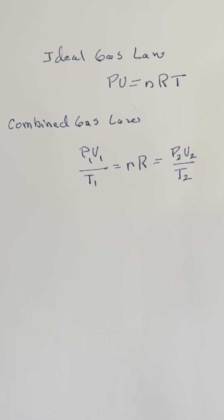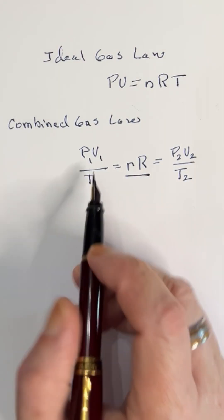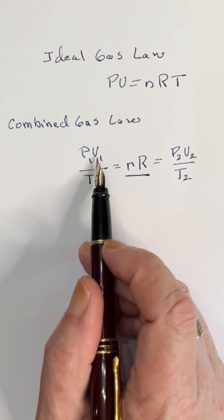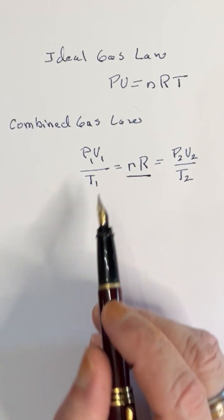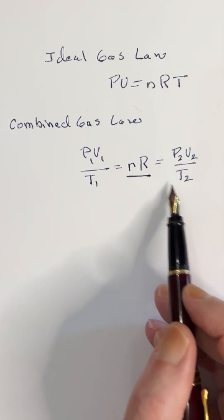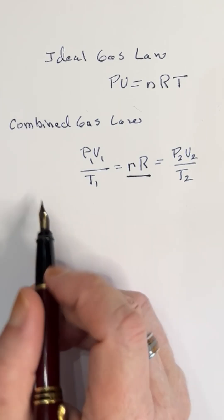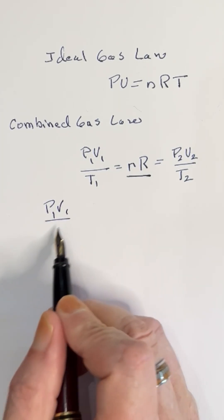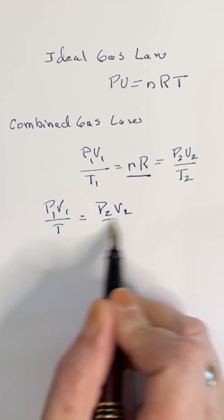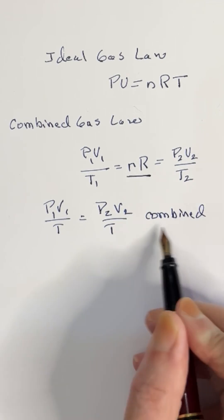Like any algebraic equation, we can manipulate this to control for certain variables. For example, if we rearrange this a little bit, we can take nR, which are constants, and set them equal to the pressure times the volume over the temperature. What's useful about this is that we can take an initial state of a gas and compare it to the same gas under different conditions, because they're both equal to the same constant. So we get P1V1 over T1 equals P2V2 over T2.